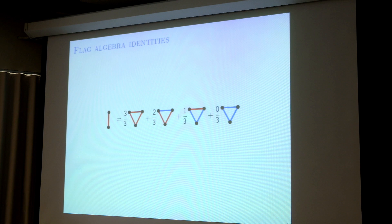So basically you randomly choose two vertices and look at the probability of a red edge. If you want to prove it, it's just some simple double counting for any two-colored complete graph. And because the last term is zero, you can just remove it.